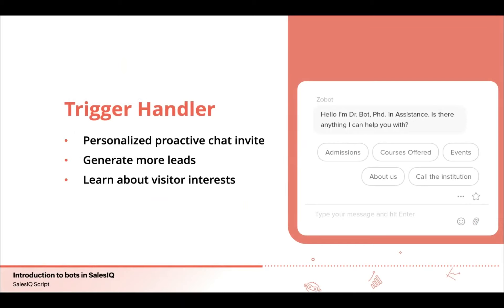The trigger handler is a piece of SalesIQ script used to invoke a custom action or message by the bot when visitors visit your website. It is executed only when the rules set in the intelligent trigger section match the visitor's criteria. It's basically a personalized proactive chat invite sent to the visitor. With these trigger messages, you can attract customers to your business and make them your prospects. It's like a welcome desk at a car showroom — once you enter, someone walks up to greet you and ask what you need help with. The trigger handler works the same way.